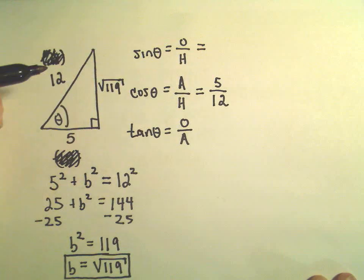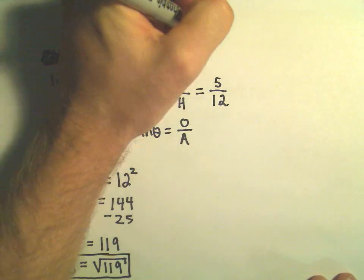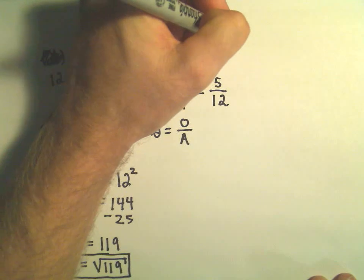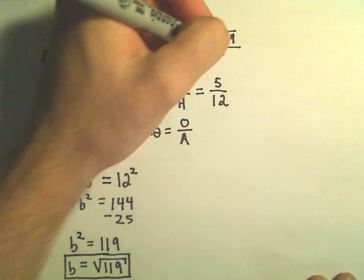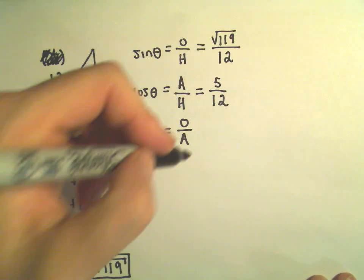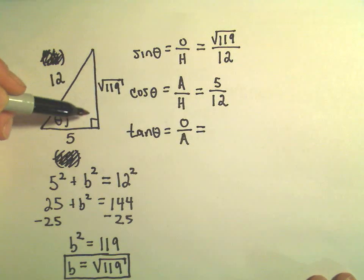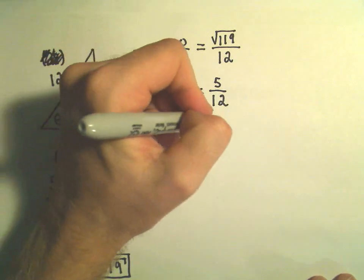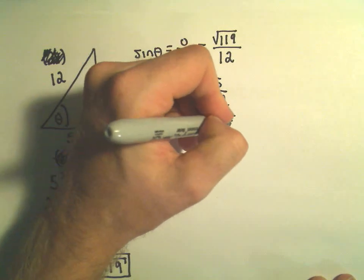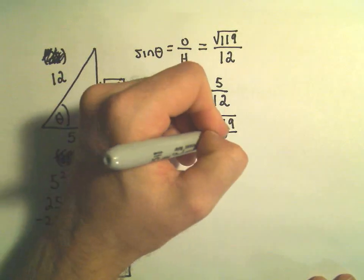To get sine of theta, that would be the opposite side over the hypotenuse. Well, that's just going to be the square root of 119 over 12. Tangent is defined to be the opposite length over the adjacent length. So that's just going to be the square root of 119 over 5.